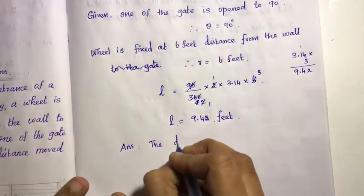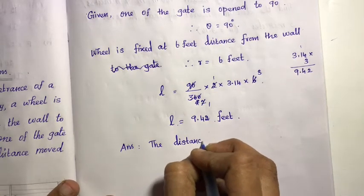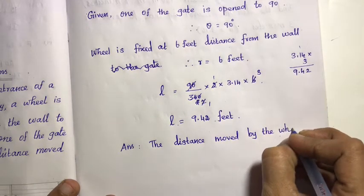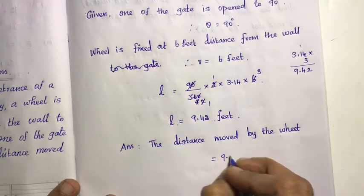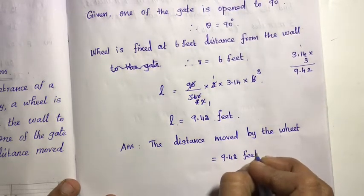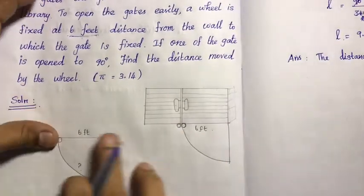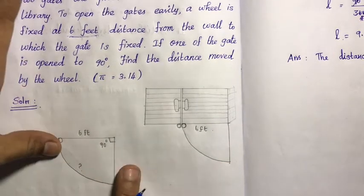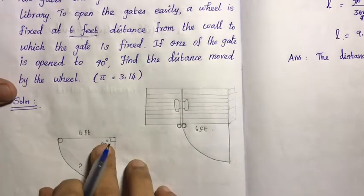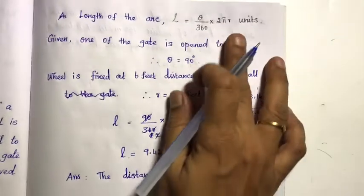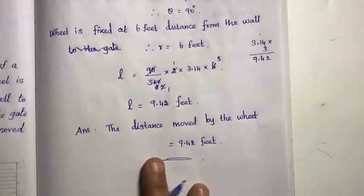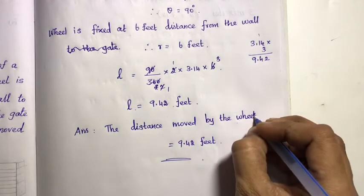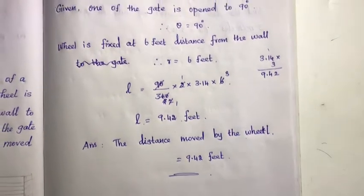The distance moved by the wheel is equal to 9.42 feet. The figure shows the gate forming a sector, and the arc length gives the distance moved. Using the formula theta divided by 360 into 2 pi r, we get 9.42 feet.